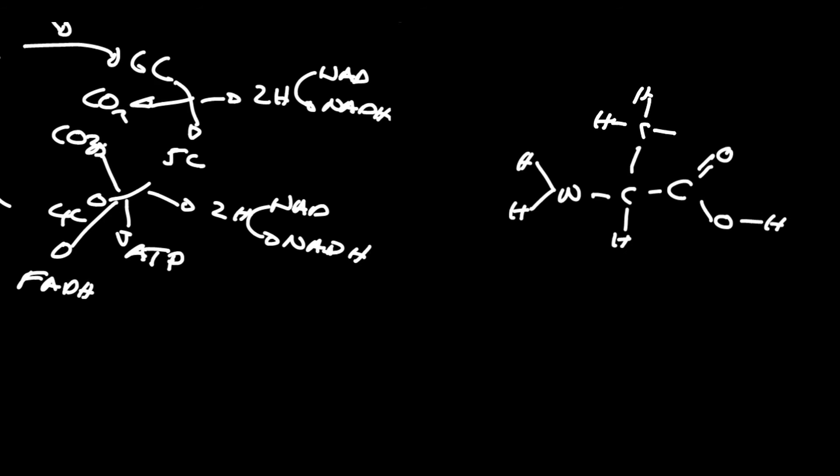Amino acids are deaminated in the liver with removal of the amine group, and that is turned into ammonia. Now, ammonia is a toxic compound that interferes with oxidative phosphorylation. So that's very quickly turned into urea. And the urea passes into your blood plasma, and then is eliminated from your body in the kidney.